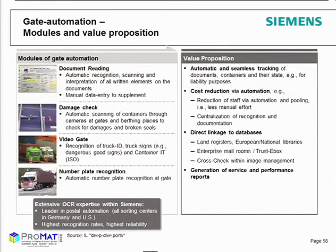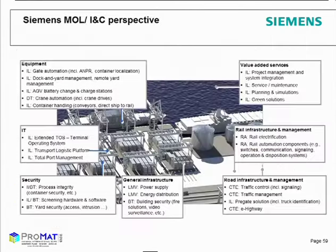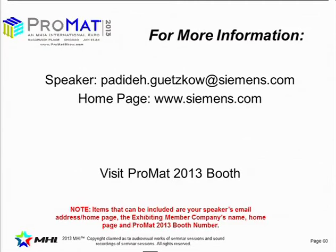Siemens also has expertise in gate automation — automatic recognition and scanning of documents, damage checking, video gates, and number plate recognition. The full product portfolio covers road infrastructure, rail, value-added services, energy supply, security, IT, and equipment. Thank you for your attention. If you have any questions, I will stay at your disposal.